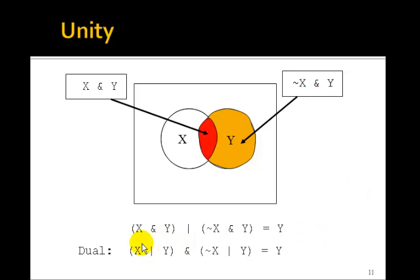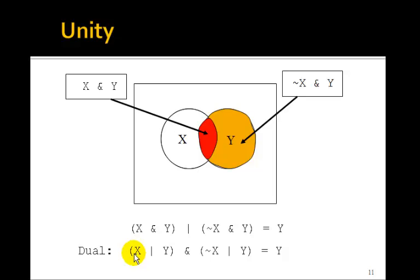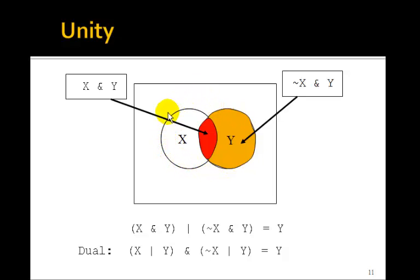The dual must also be true. If we change ANDs to ORs and ORs to ANDs, then x OR y ANDed with NOT x OR y must also equal y. From the Venn diagram: x OR y is both circles. NOT x OR y is everything outside of x plus everything in y — everything except the area that only contains x. If you AND that with x OR y, the overlap gives you just y.